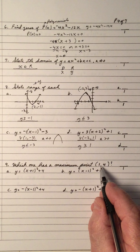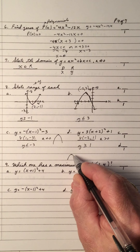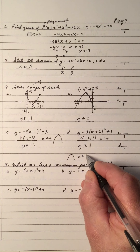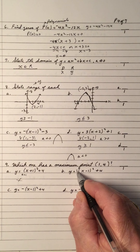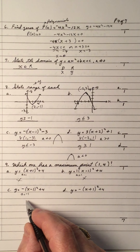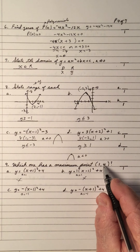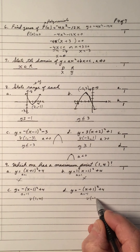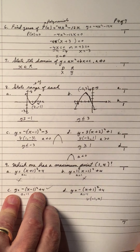Number 9: which equation has a maximum point of (1, 4)? A maximum point means the parabola opens downward, so a is less than 0. Eliminate options where a is positive. Among the remaining options, one has vertex (1, 4) and the other has vertex (-1, 4). The answer is C, with vertex (1, 4). Give yourself a mark. Total up your page — out of 7.